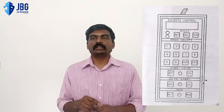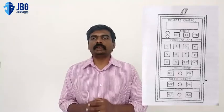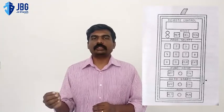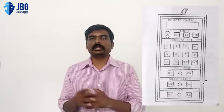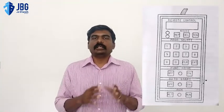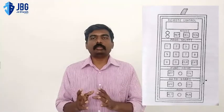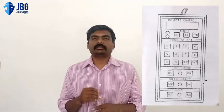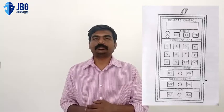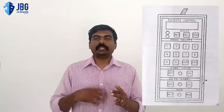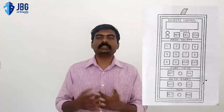The operator presses a record push button, which causes the controller to record in memory the position of the joints — for example, the angle of the revolute joint, the length of the prismatic joint, etc. This process — move the robot, record the point — is repeated many times during the teaching process.